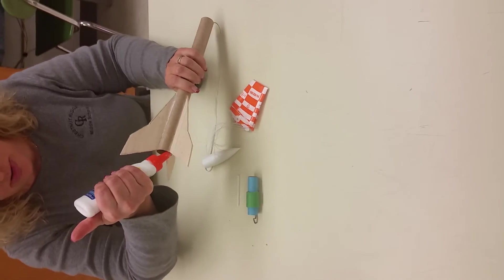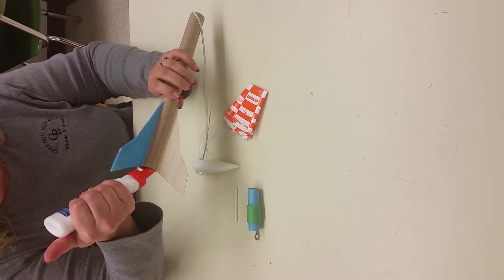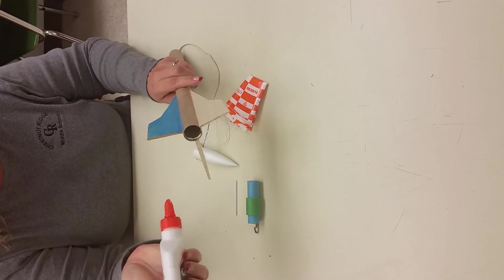Take some Elmer's glue and put it all around on the inside of your body tube.